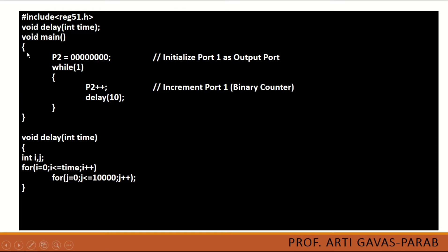Then we need a main function. In the main function, we have taken one port, P2, which is initialized to zero for all pins. You can define P2 equal to zero this way, or write 0x00 if you are going to assign the value in hexadecimal. Then this is an infinite loop, while(1). We require an infinite loop for any embedded system program.